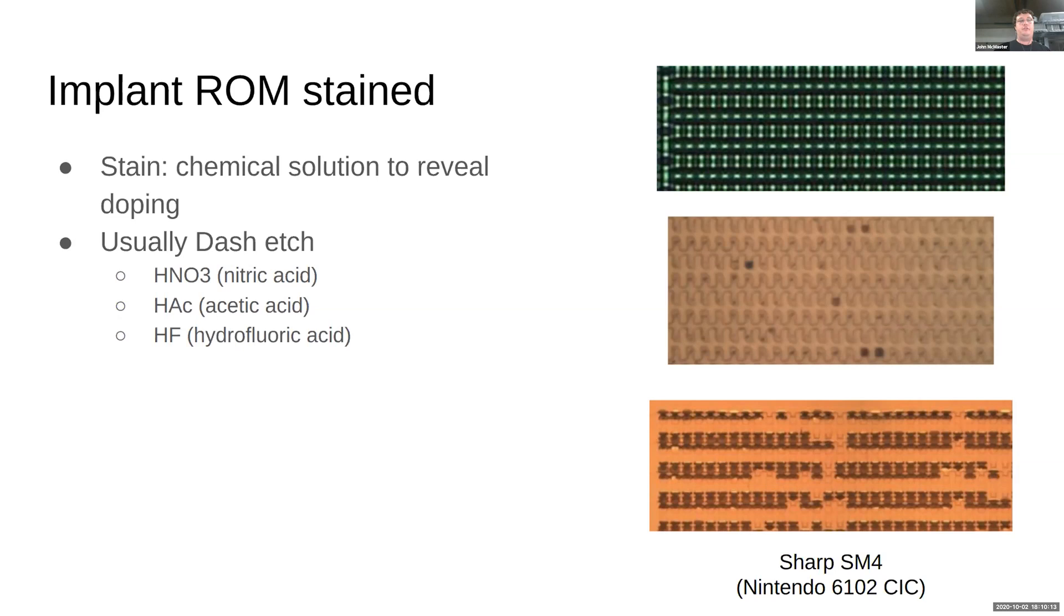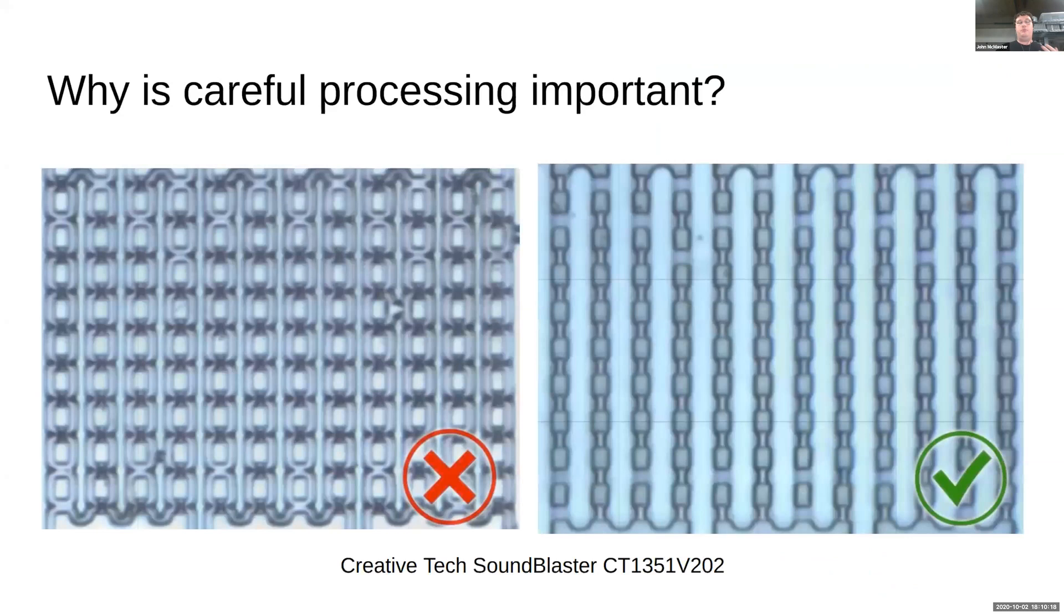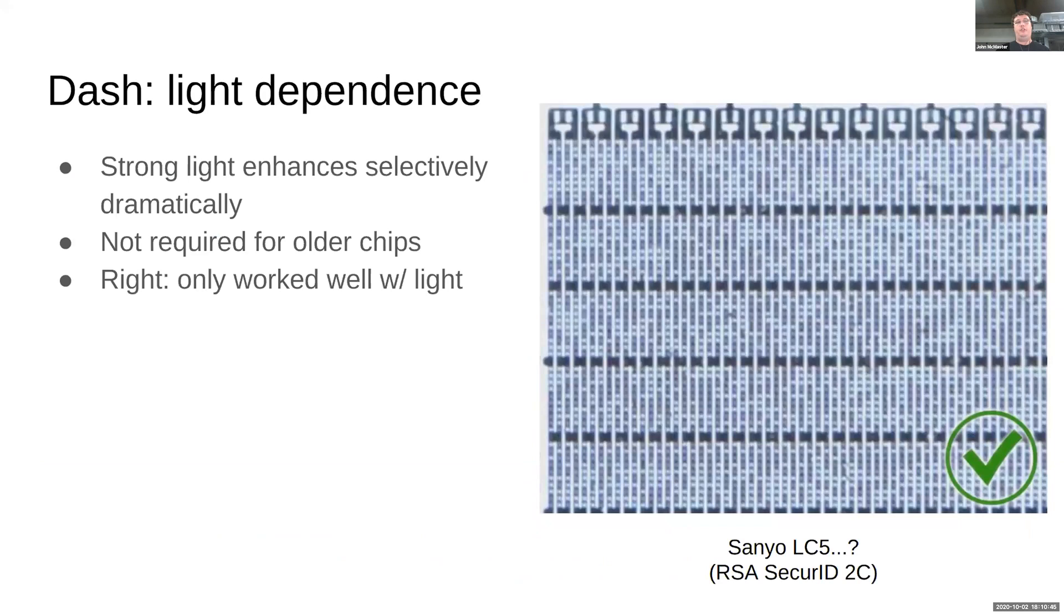One way that you can do that is you can use a process called staining, where stain is basically a special chemical solution to reveal the bits on the chip. And the most common of these is something called dash etch, where dash etch is a mix of nitric acid, acetic acid, and hydrofluoric acid. Now, hydrofluoric acid especially is a very exciting chemical. We'll talk a little bit more about that later. And this process is very sensitive. There's a lot of things that can go wrong. The focus of this talk will be kind of a novel approach to do this processing, and less so on the process itself. But you can see here, for example, the same chip that was etched in two different ways with only very slight differences. The one on the right is very readable, whereas the one on the left is over etched and it's a little bit hard to read the bits.